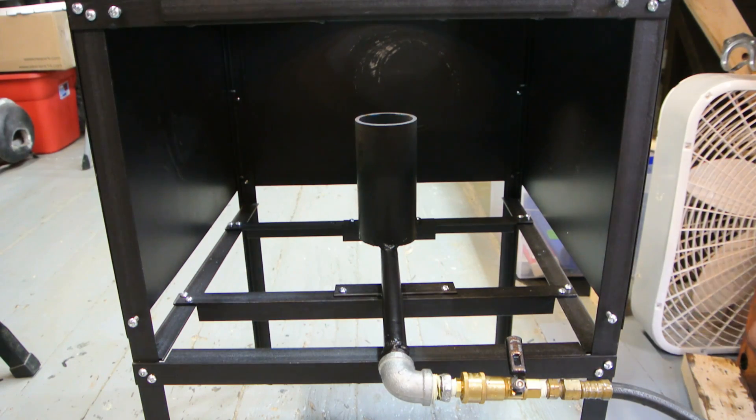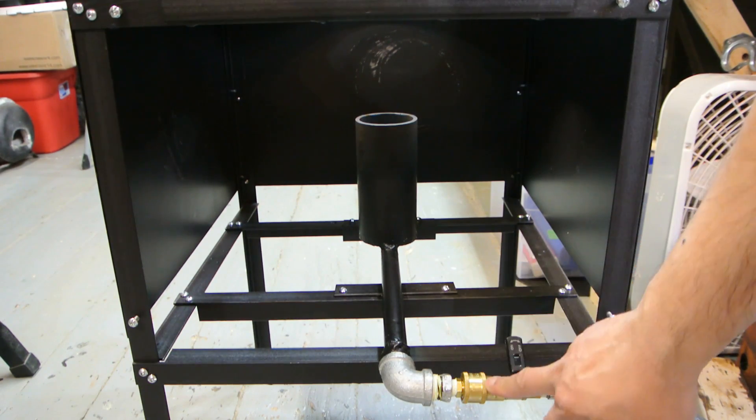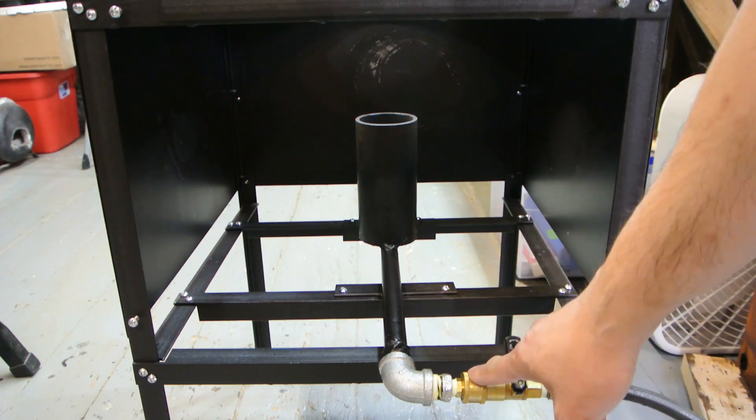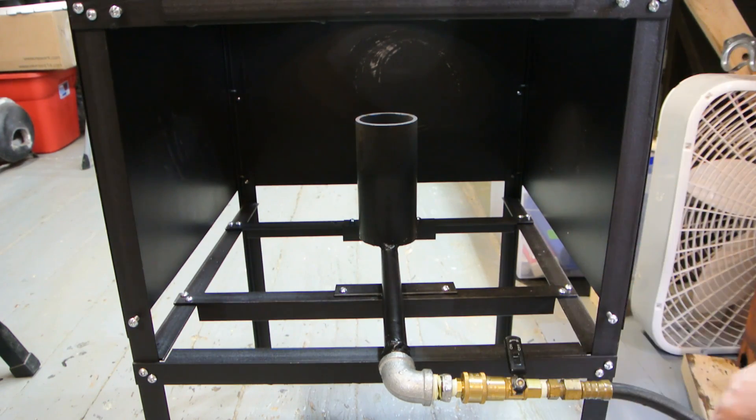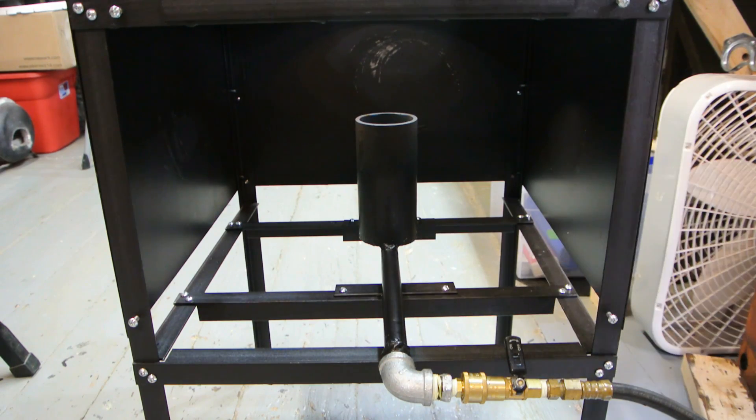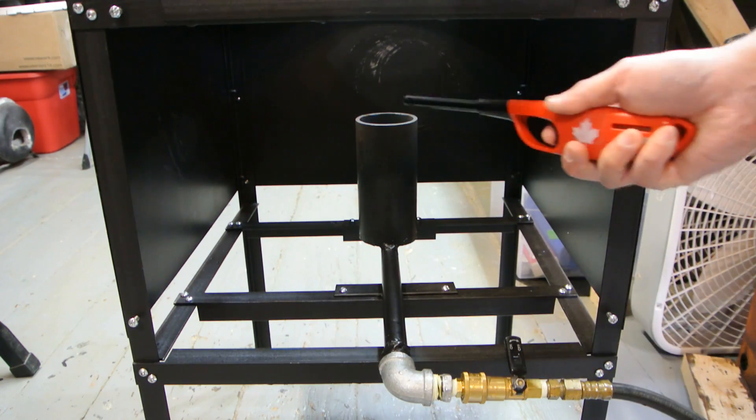So to control the flame size, I used the ball valve on my coupler here, the quick coupler. But you could pipe in an inline ball valve as well. So now I'm just going to light it.